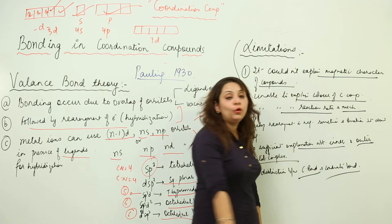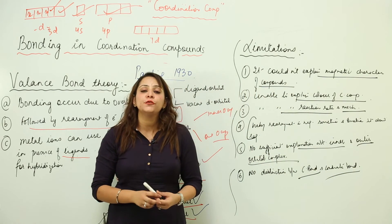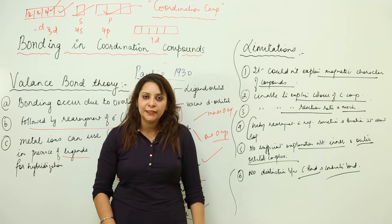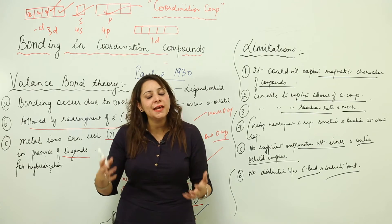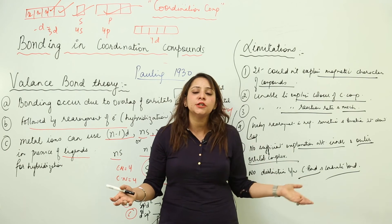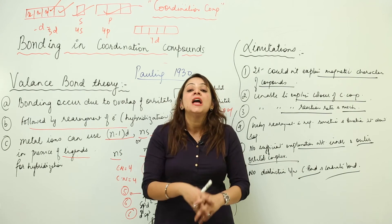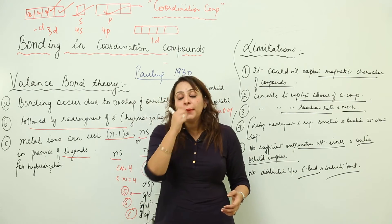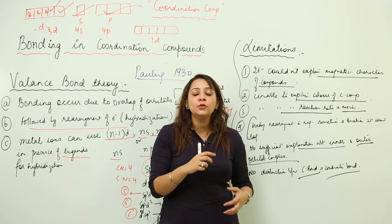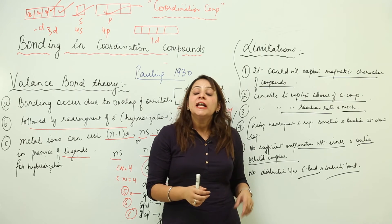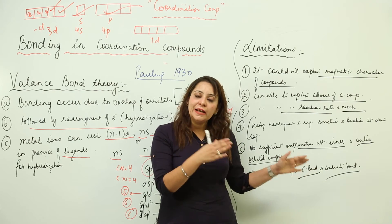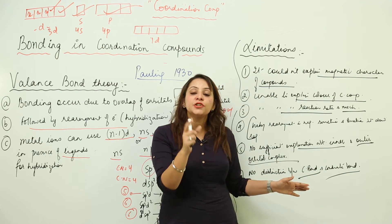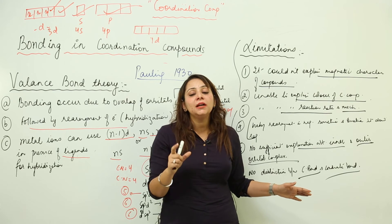You know that in a covalent bond, whenever the covalent bond is formed, it is formed by the mutual sharing of electrons. When you are forming a covalent bond, you see one electron contributing from one side, one electron from the other, they are pairing up and forming a covalent bond. But this kind of thing you don't find after the formation. Likewise, in the coordination compound, when the bond is formed, there is again this shared pair.